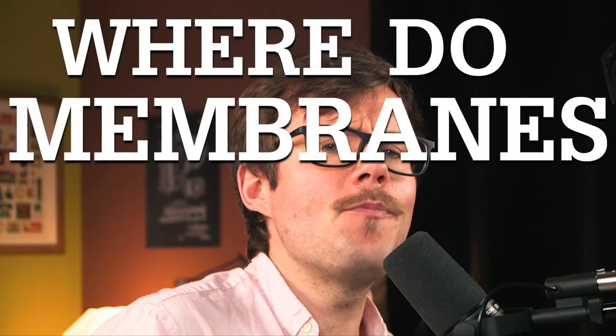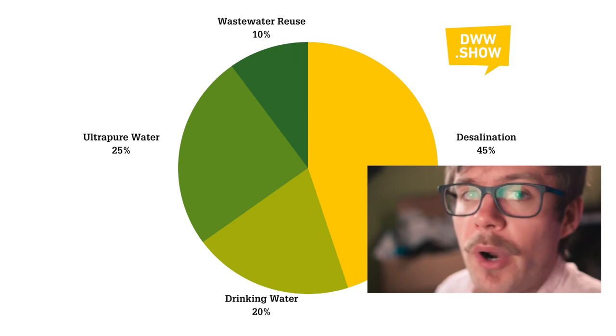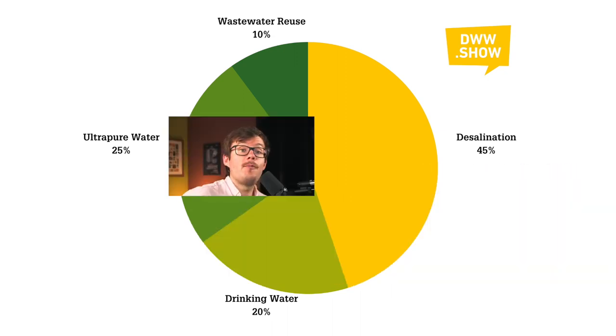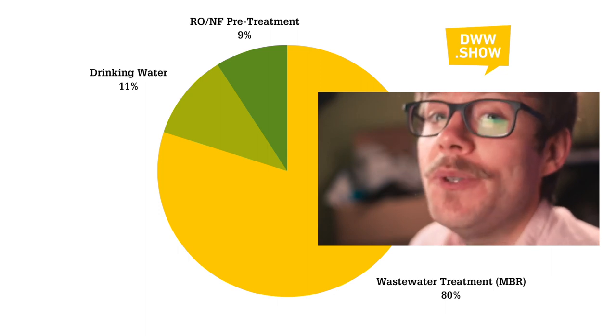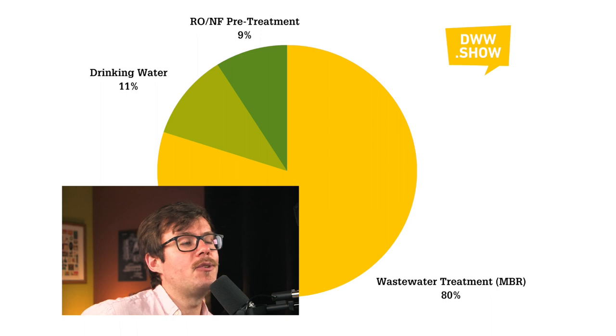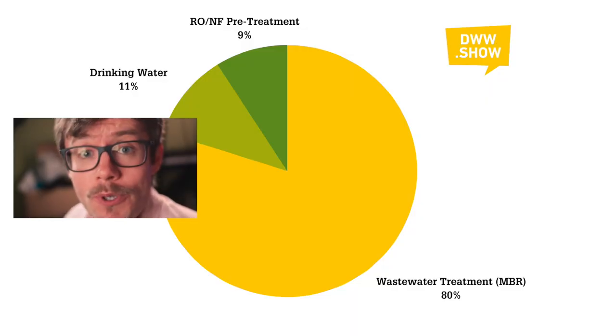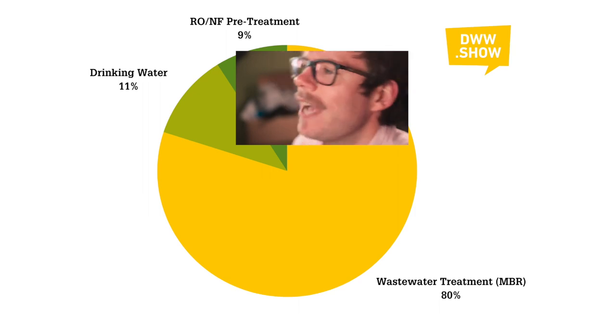At the same time, continental Europe aimed to reduce chlorine usage, seeing membranes' ability to remove viruses and microorganisms as a way around chlorine's carcinogenic by-products. This brought a spectacular scale effect in the membrane industry, resulting in tumbling prices that made membranes cost-competitive across almost every process. Today, RO and NF systems are split roughly 45% in desalination, 20% drinking water, 25% ultra-pure water, and 10% wastewater reuse. MF and UF are used 80% in wastewater treatment — largely in membrane bioreactors — 11% in drinking water, and 9% as pretreatment for RO/NF systems.